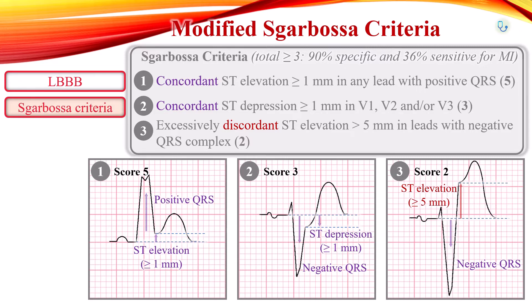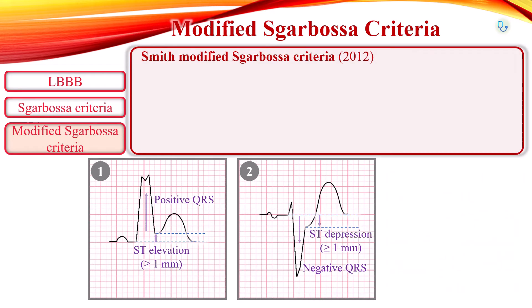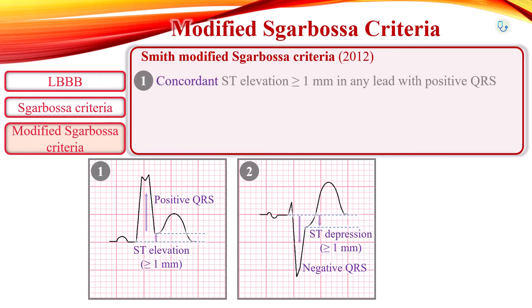The Smith-modified Sgarbossa criteria was introduced in 2012 to improve diagnostic accuracy for occlusion myocardial infarction in left bundle branch block. The first two criteria are straightforward and the same as the original criteria: concordant ST segment elevation of at least 1 mm in any lead with a positive QRS complex, and concordant ST segment depression of at least 1 mm in any of V1 to V3.